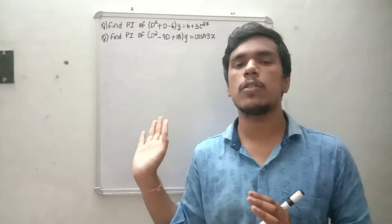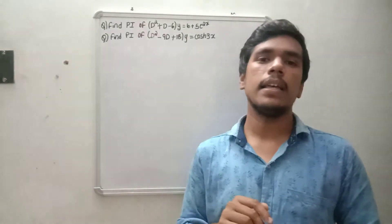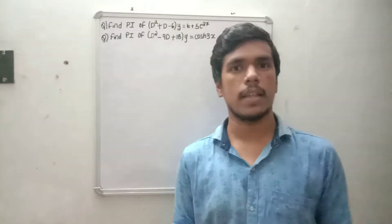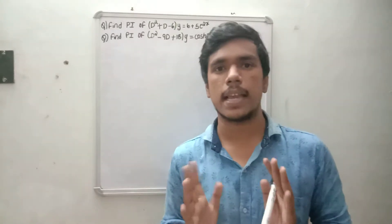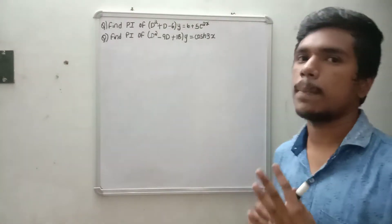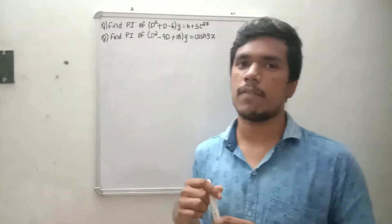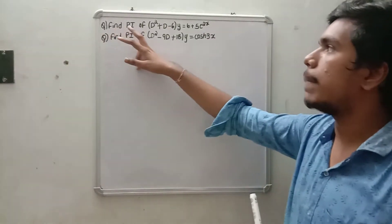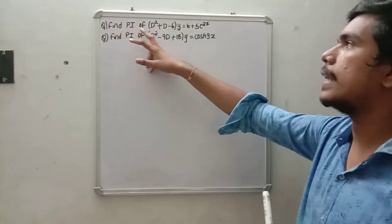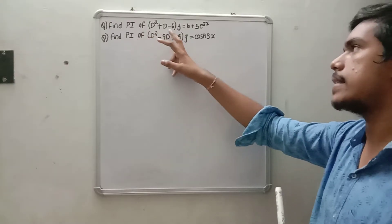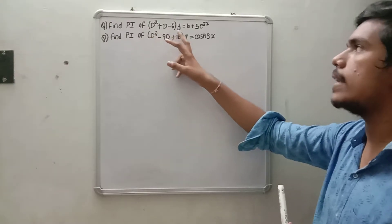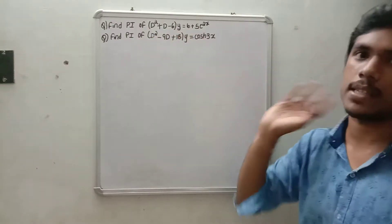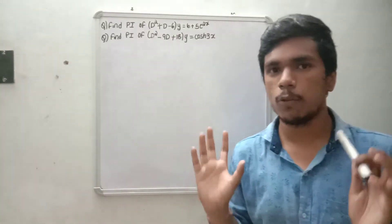Today, we will do the third video of this series. I will tell you about cos x and sin x. First of all, I will tell you about the particular integral of D squared plus D minus 6 into y equals 6 plus 5e to the power 2x. This is the given question.